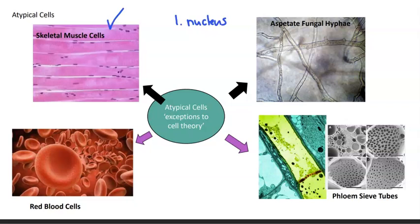Notable examples can be found in skeletal muscle cells. You can see the muscle cells running from left to right, and notice how large they are. Each of those black dots you can see are actually nuclei. Skeletal muscle cells are multi-nucleated, which is not what we ordinarily understand a cell to be.